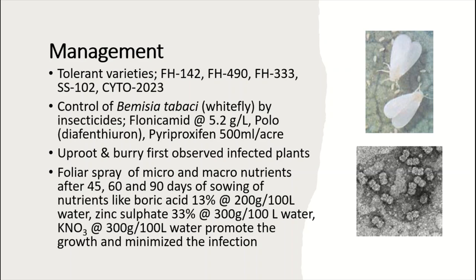Management: use tolerant varieties such as FH-142, FH-490, and FH-333. Controlling the vector is most important. The whitefly is controlled using insecticides such as Flonicamid, Comite, or Polo (pyriproxyfen). These are the latest insecticides used for controlling whitefly. Uprooting and burning of the first observed infected plants can also be done at intervals of 45, 60, and 90 days after sowing.